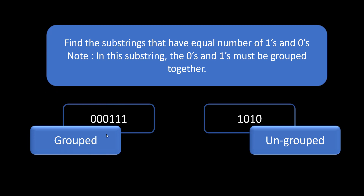So let's take these two examples. This string contains equal numbers of zeros and ones, and all the zeros are grouped together and all the ones are grouped together, so this substring can be considered in the output. Now if you see this other substring, it has equal numbers of ones and zeros, but it cannot be counted because the ones and zeros are scattered and ungrouped. However, you can break the substring and then you'll have equal numbers of ones and zeros where they are grouped together — one-zero would be one substring and the next one-zero would be another.